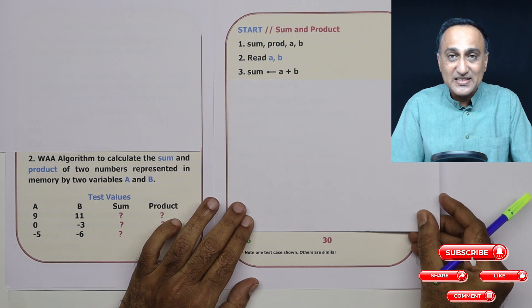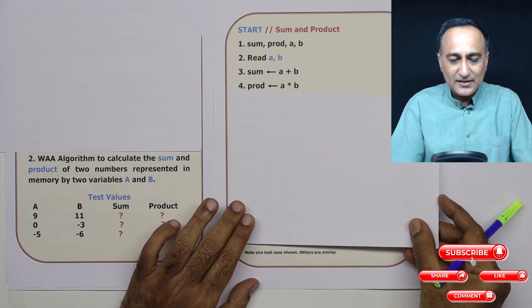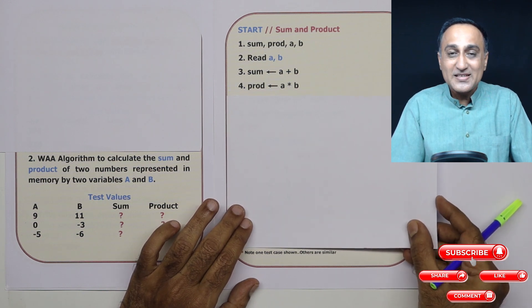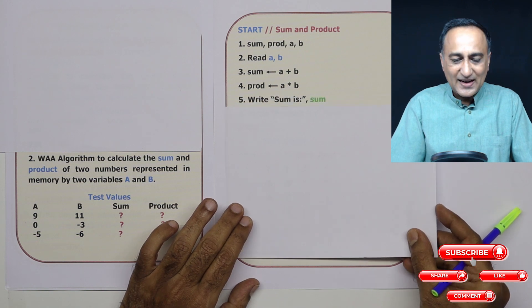Then, first step, I calculate sum as A plus B. Next is prod, assigned as A times B.